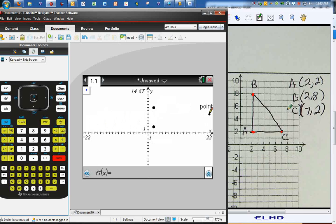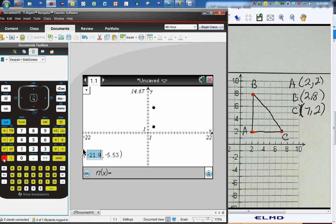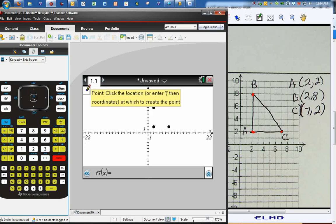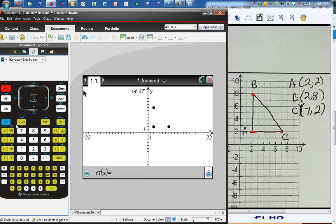And now I want to put 7, 2 as my last point. Open the parentheses. 7, enter, 2, enter. And now I have my three points. So, now I don't want any more points, so I'm going to hit escape.